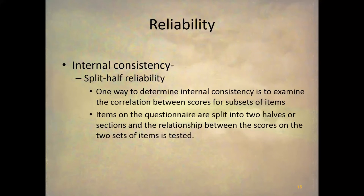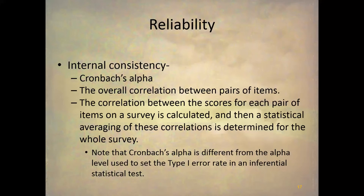In the split-half method, we literally — or actually figuratively — split the test in half. If the test has 20 questions, like the BSRI, we look at the first 10 and the second 10 and treat those as two different tests, then correlate them with each other. We would expect that if it's reliable, the two halves would correlate well. Another way is totally statistical: Cronbach's alpha looks at the overall correlation of pairs of items on the test, compares that to the overall variance of the test, and gives you a level of internal consistency. Note that this is not the same as the alpha level in statistical hypothesis testing.